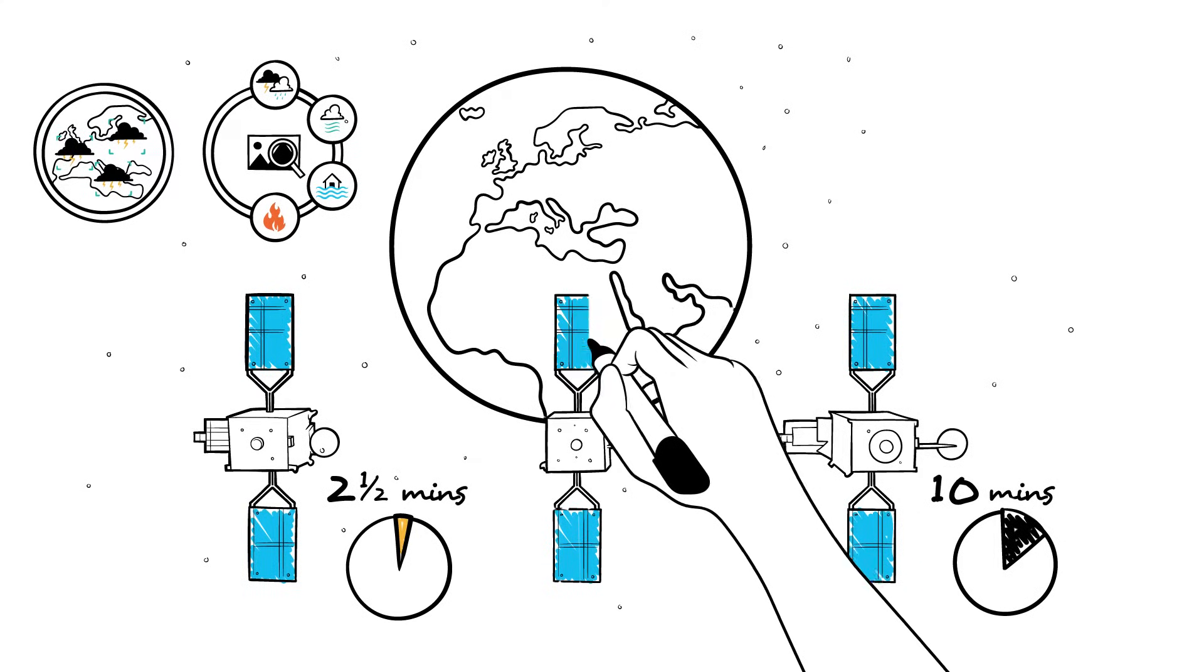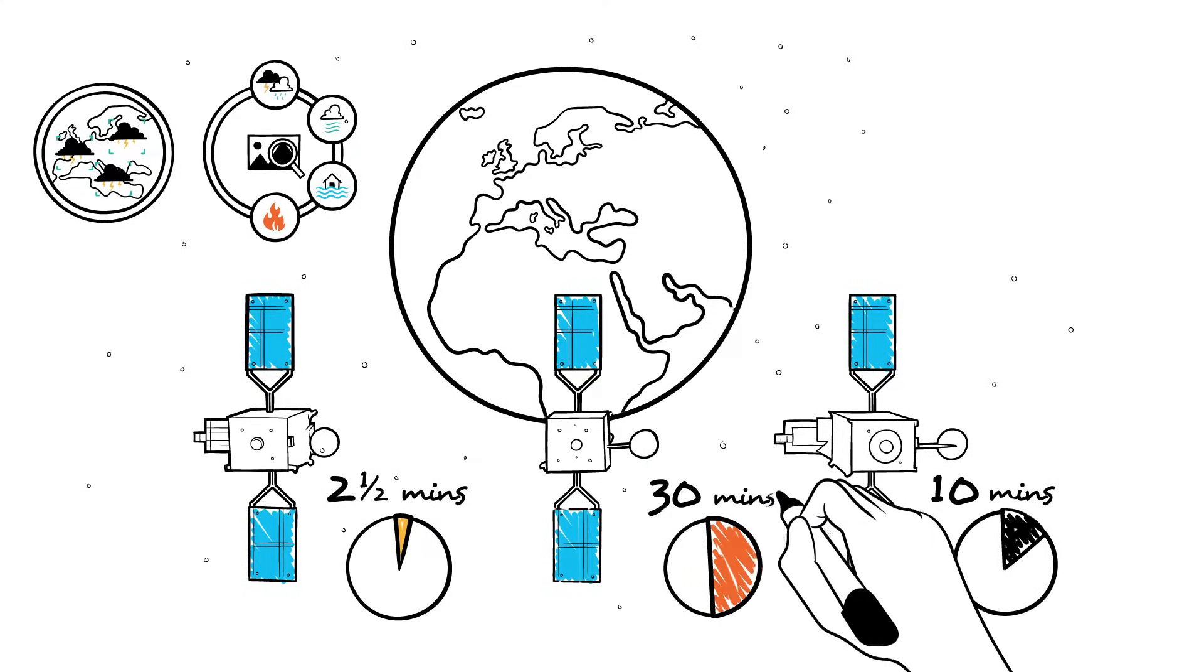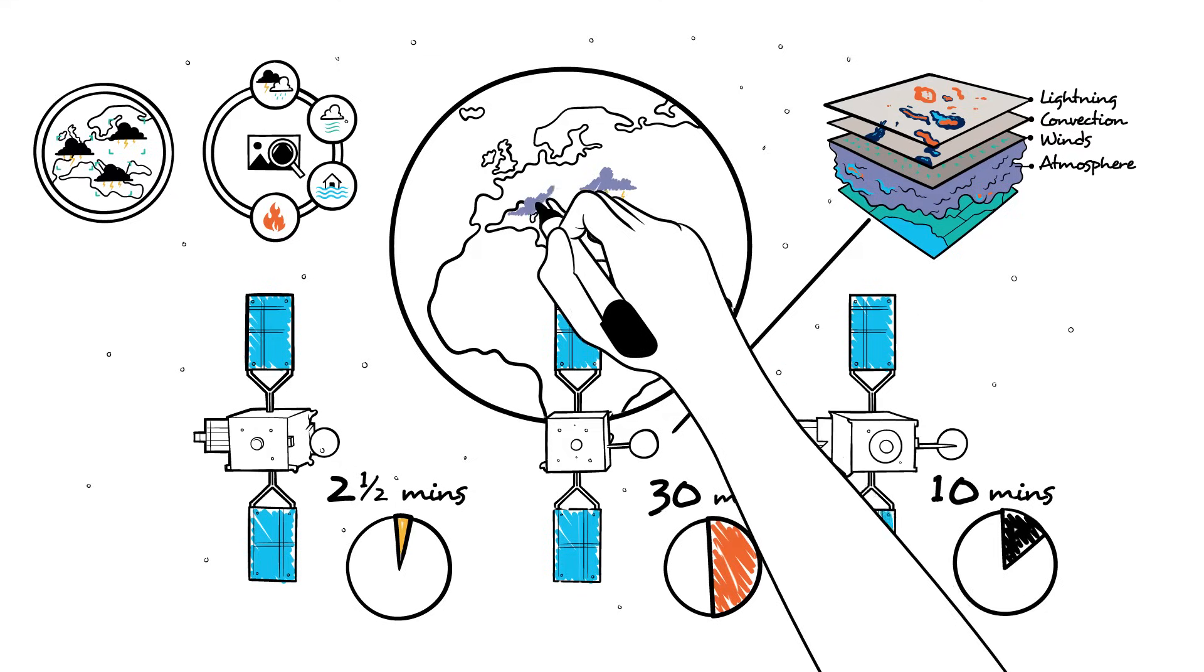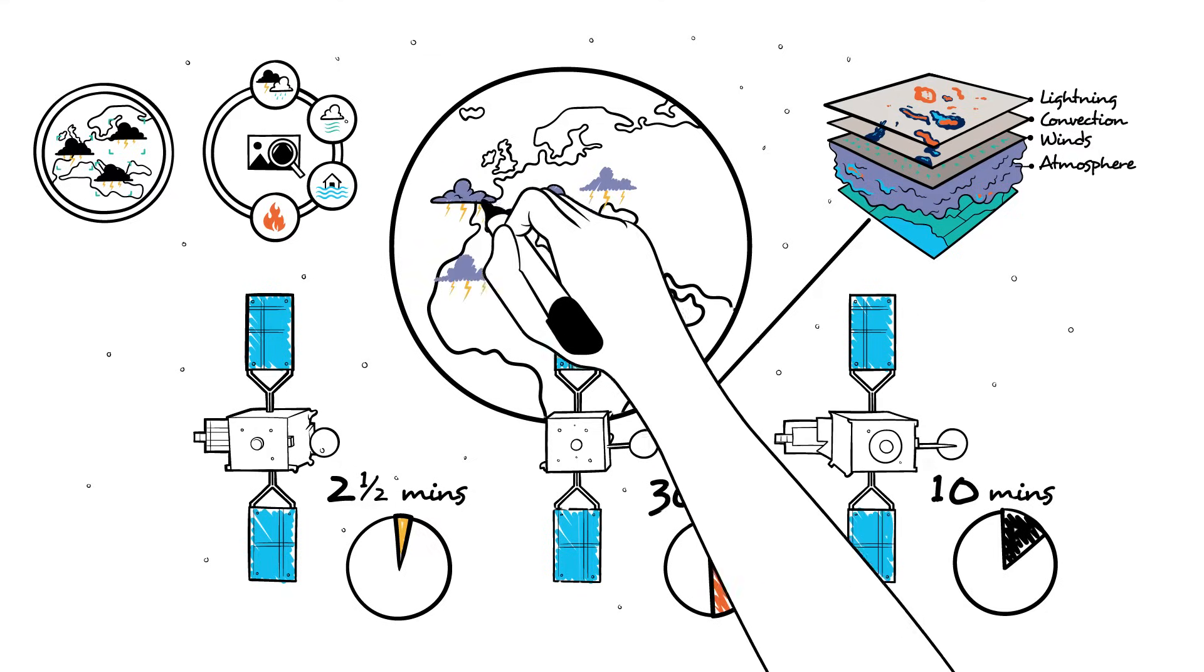The third satellite of the MTG trio will be able to make 3D scans of the atmosphere, revealing, among other things, where storms are likely to develop.